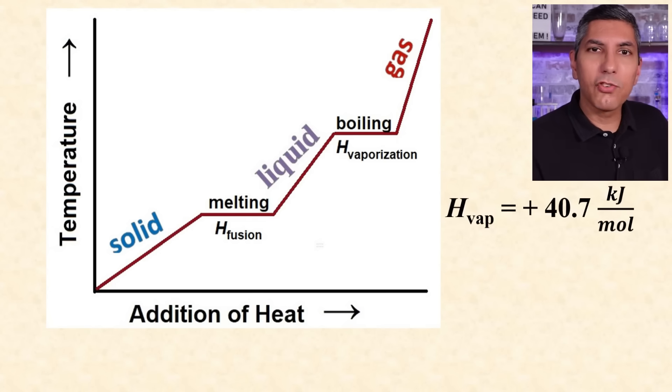Freezing and melting are two processes that undo each other, as are boiling and condensation. So if the heat of vaporization of water is positive 40.7 kilojoules per mole, that means that the heat of condensation of water would have to be negative 40.7 kilojoules per mole.